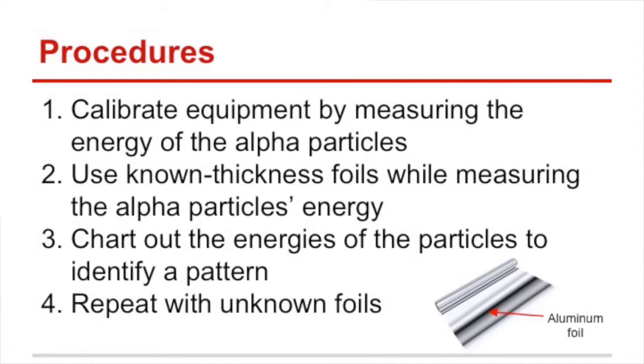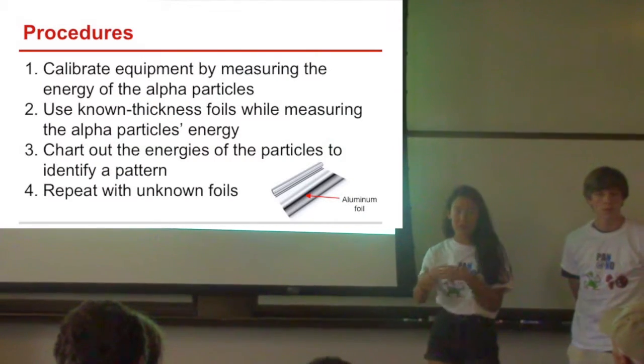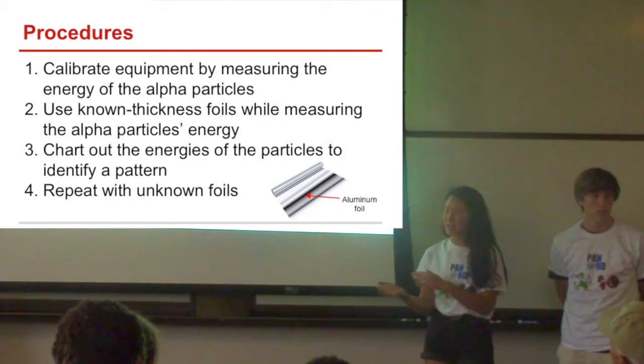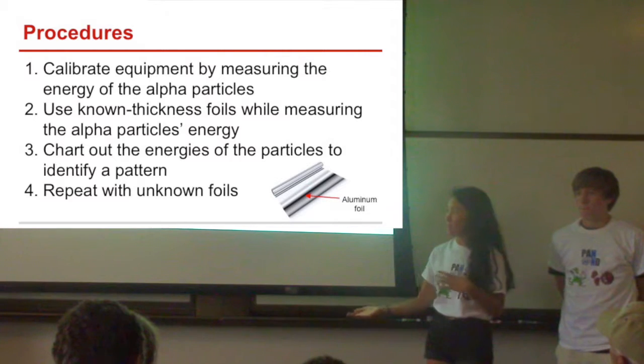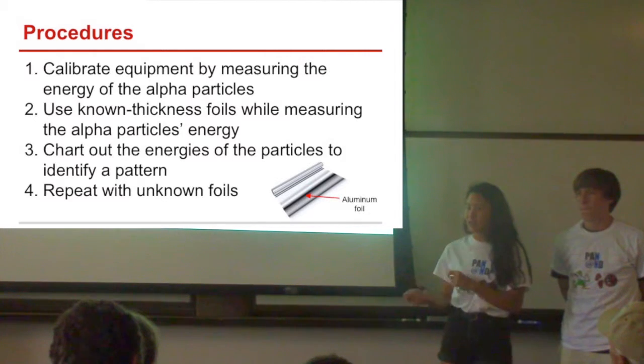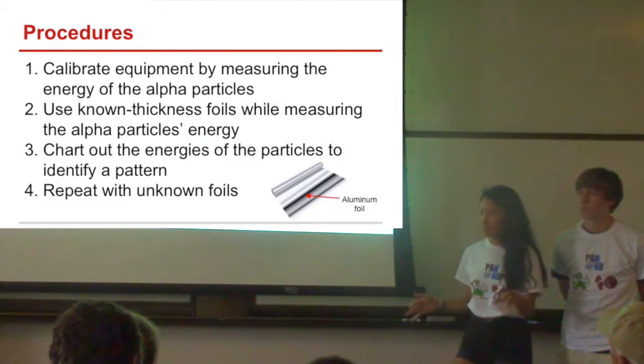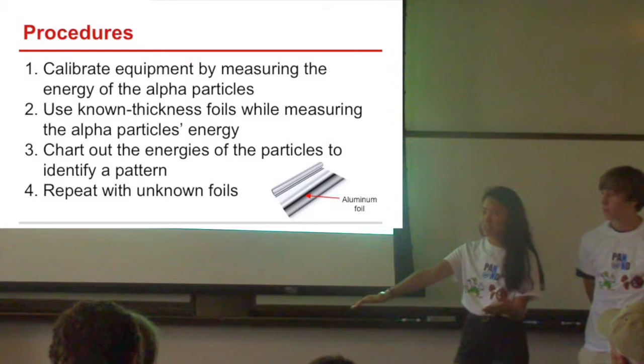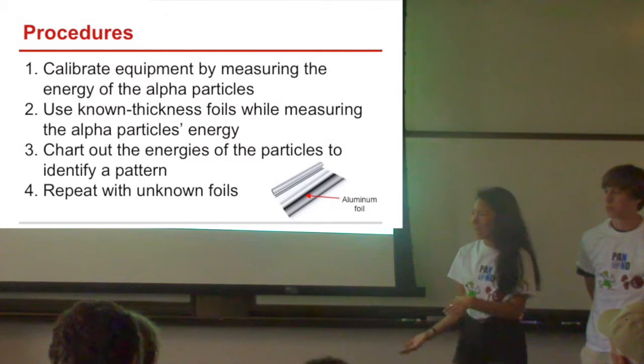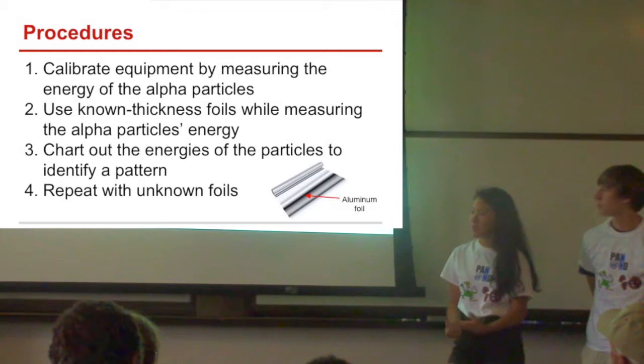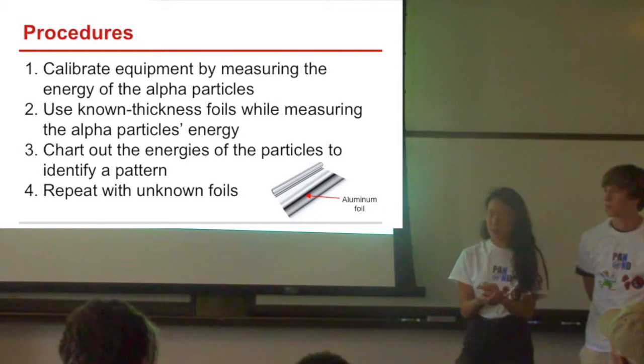Our procedures were to calibrate everything to make sure that our measurements would be accurate. Initially, we put in foils that we knew the thickness of, and we measured how much energy they had when they came through and how many of them came through, so that we had something to base everything else off of. Then we took the foils that we didn't know the thickness of and ran the same procedure, and we compared how much energy those foils had compared to the foils that we knew the thicknesses of, and used that to figure out how thick our unknowns were.